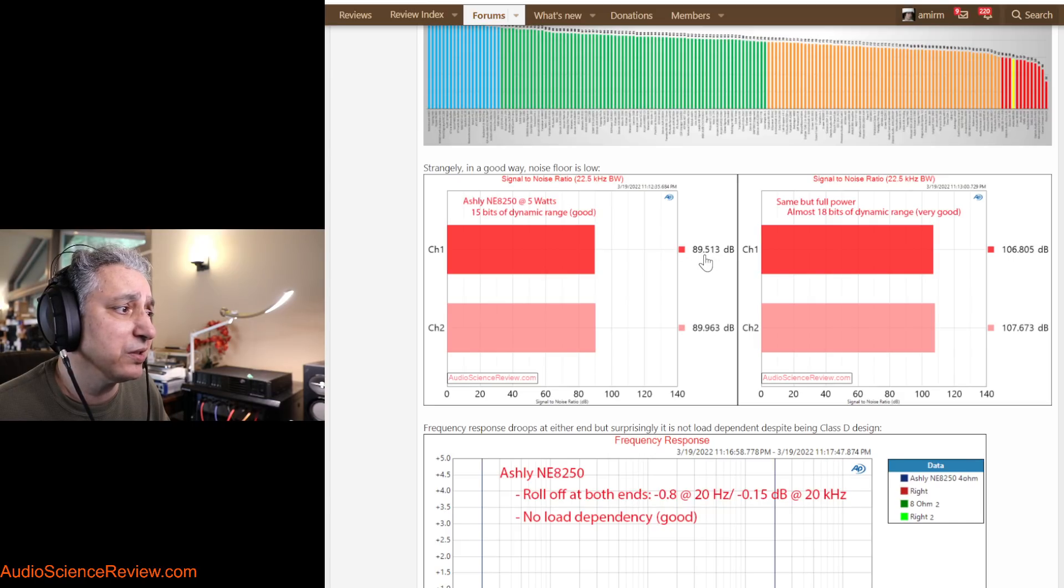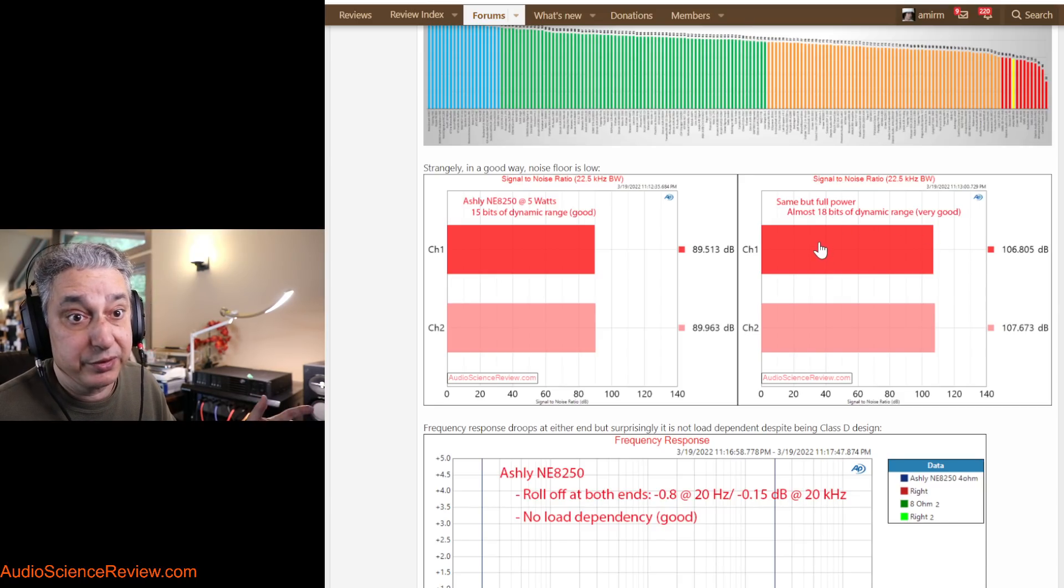So at just 5 watts, it has 15 bits of dynamic range. This beats a lot of consumer amps. My target is 96 dB, but that requires being in this blue category to usually hit it. And then when you turn it up at full volume, the noise doesn't get elevated as much. So it gives you 18 bits of dynamic range. So it's high res ready.